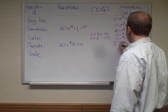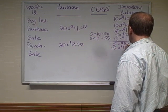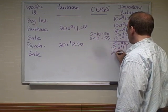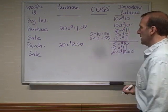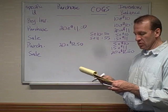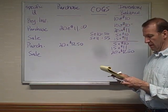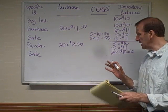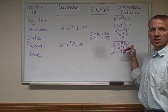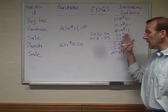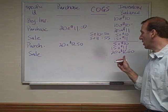So after that purchase we have 5 at $10, 15 at $11, and 20 more basketballs at $12.50. Now the last transaction is we sold 15 of them. The problem tells us we sold the $11 ones — it could have been any of them, but the problem specifies it was 15 of the $11 ones.